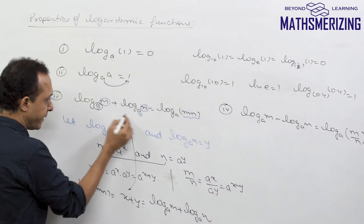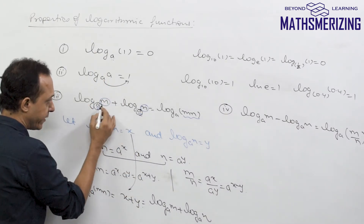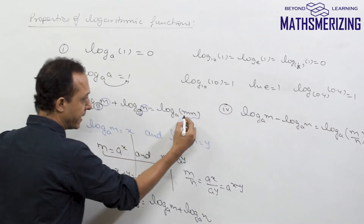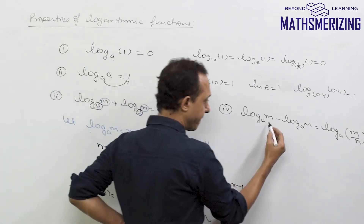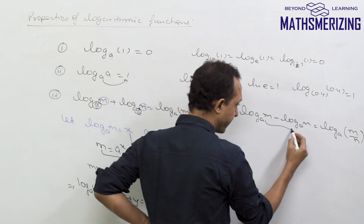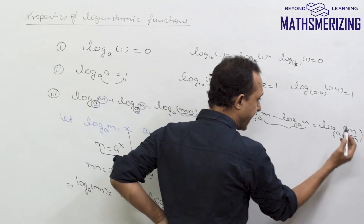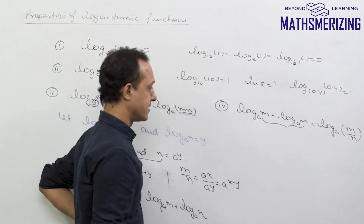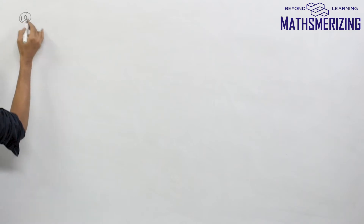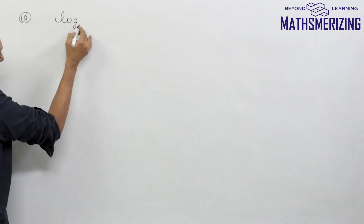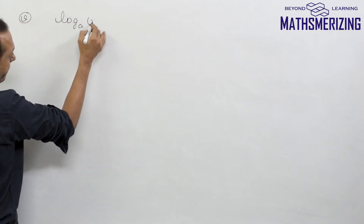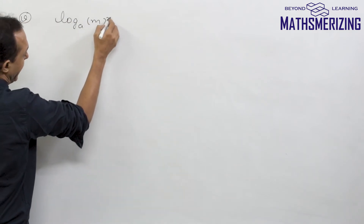So if we have log on the same base a and we add them, the result is log(m·n), and if we subtract them, the result is log(m/n). The fifth property is log of m to the power n.